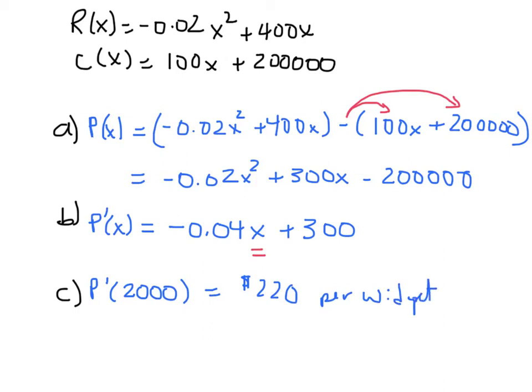And that's an approximation of the amount of money we'll make if we produce and sell the two thousand first widget. We'll make 220 dollars, which is good news - we're still making money.